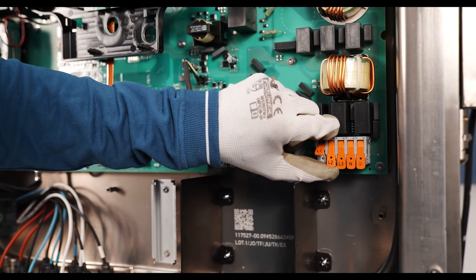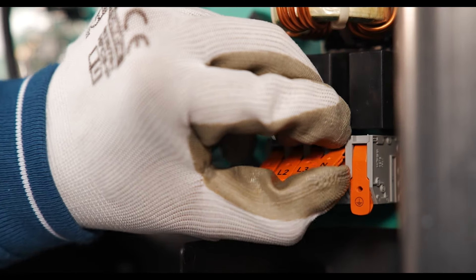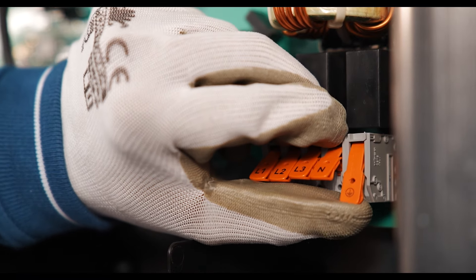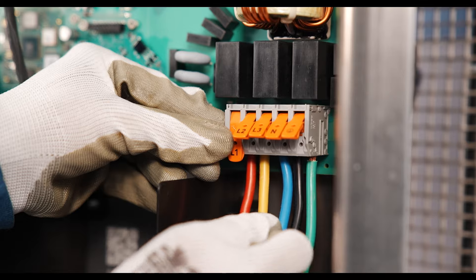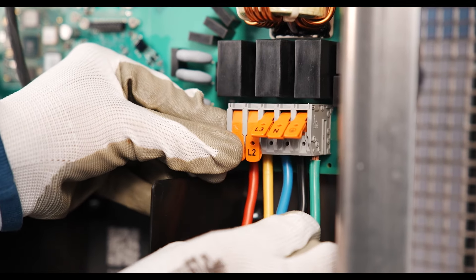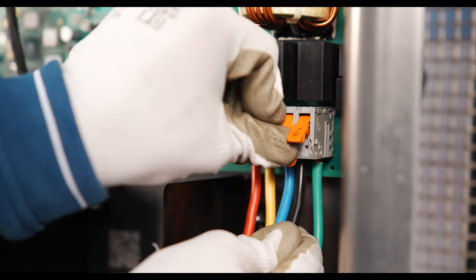For cable termination, press the locking lever of terminal L1, L2, L3, N, and PE upward. Guide conductor L1, L2, L3, N, and PE into the terminal and press locking lever downward.